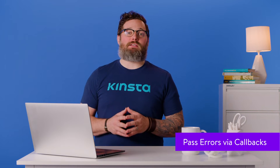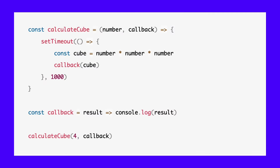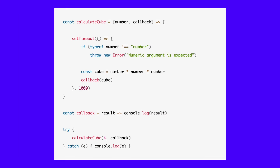While simple and linear functions allow error handling to remain simple, callbacks can complicate the affair. Consider the following piece of code. The above function demonstrates an asynchronous condition in which a function takes some time to process operations and returns the result later with the help of a callback. If you try to enter a string instead of a number in the function call, you'll get NaN as a result. This needs to be handled properly.